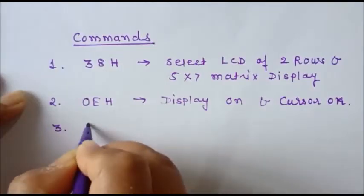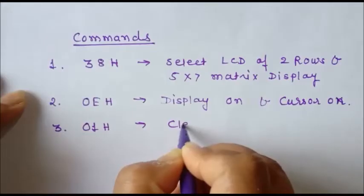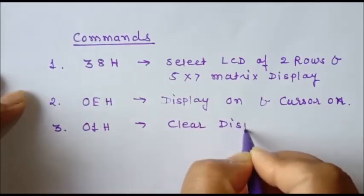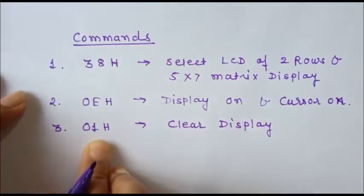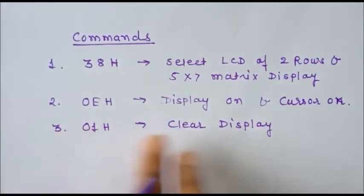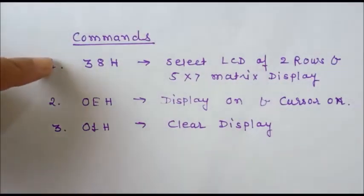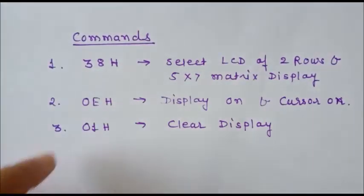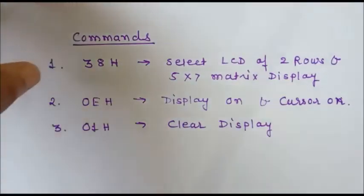The third command is 01h, which is used to clear the display. Before displaying any data on the LCD, we send this command to clear any previously displayed data. Generally, the initialization sequence in an LCD program is: first send 38h, then 0Eh, and then 01h.